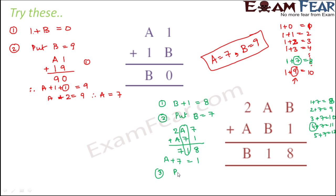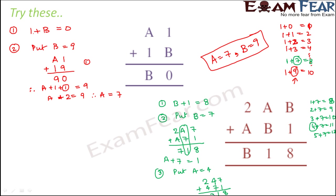In step 3, we put A equal to 4. So this becomes 247 plus 471 equals 718. Adding: units digit 7 plus 1 is 8; tens digit 4 plus 7 is 11, write 1 carry 1; hundreds digit 2 plus 4 plus carry 1 is 7. So this absolutely fits. Therefore, in this problem, the value of A is 4 and the value of B is 7.